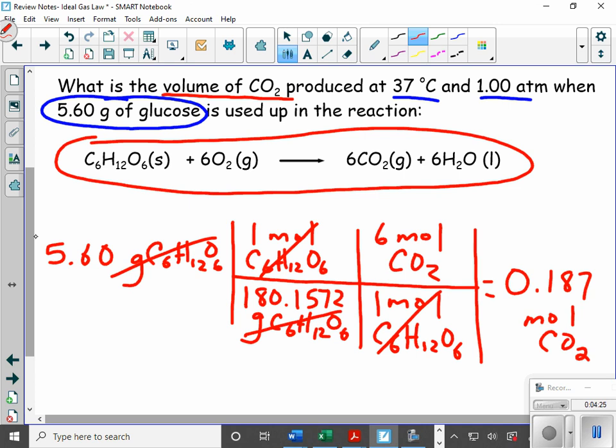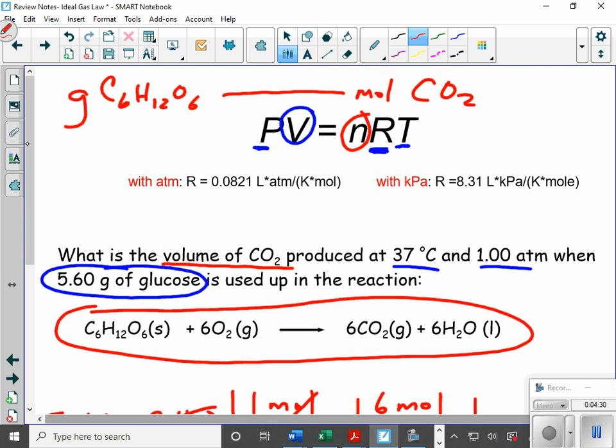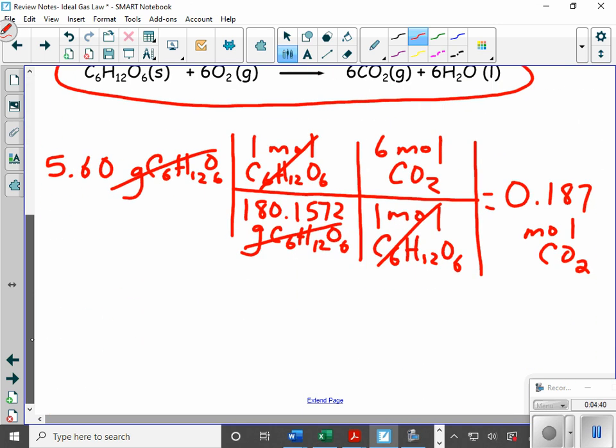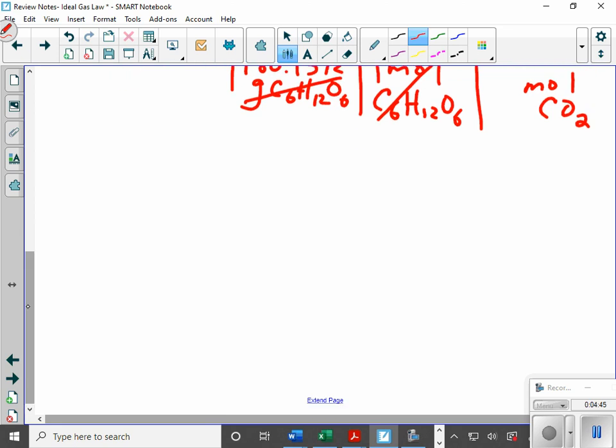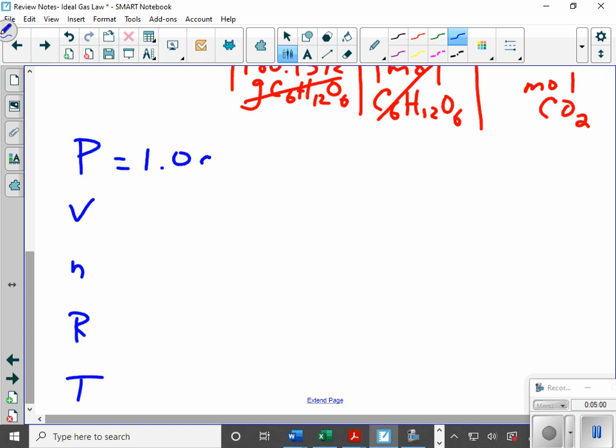Now, once I've got that, I come back up here. Now I have my moles of CO2. So now I can use PV equals nRT. I come back down, and I do like I always did. P, V, N, R, T. So I go back to the problem. My pressure was equal to 1.0 atmospheres.